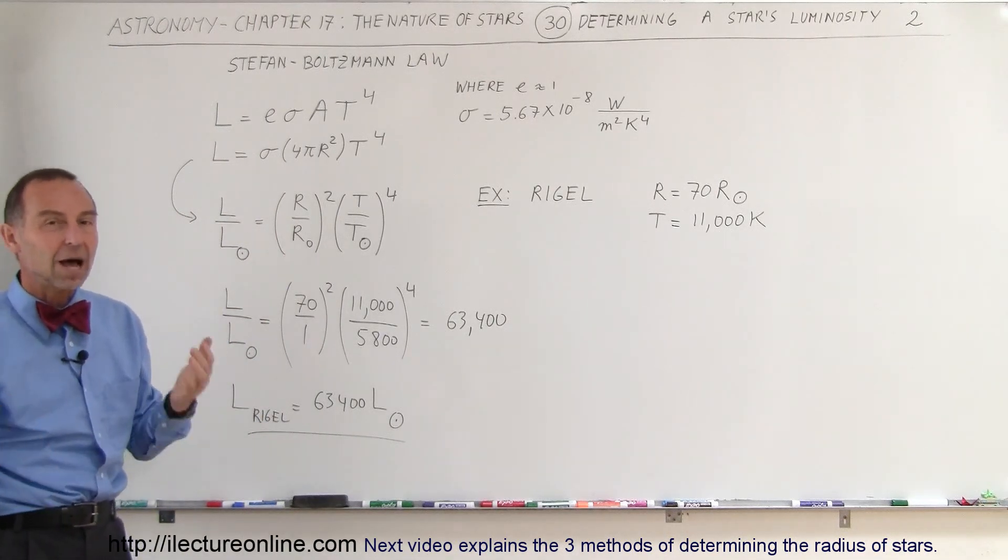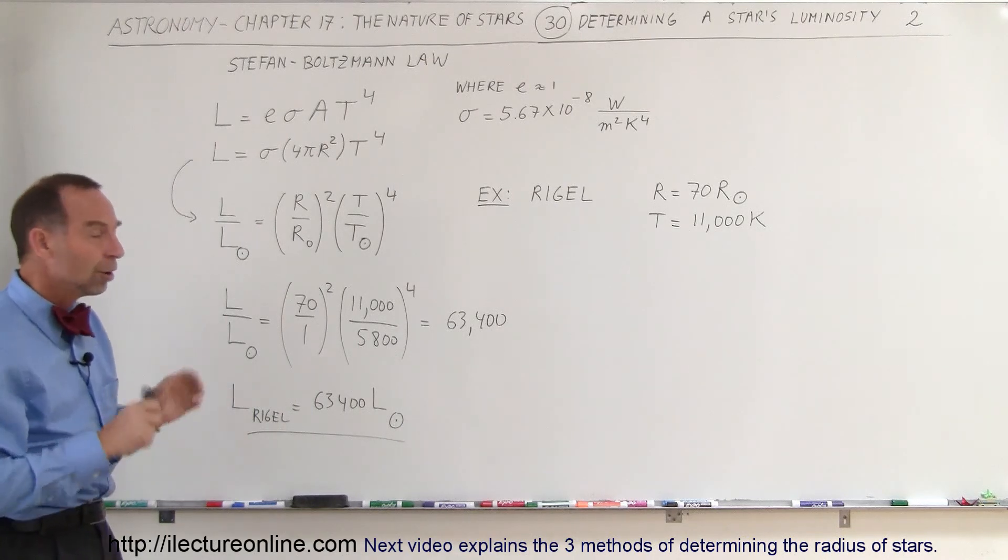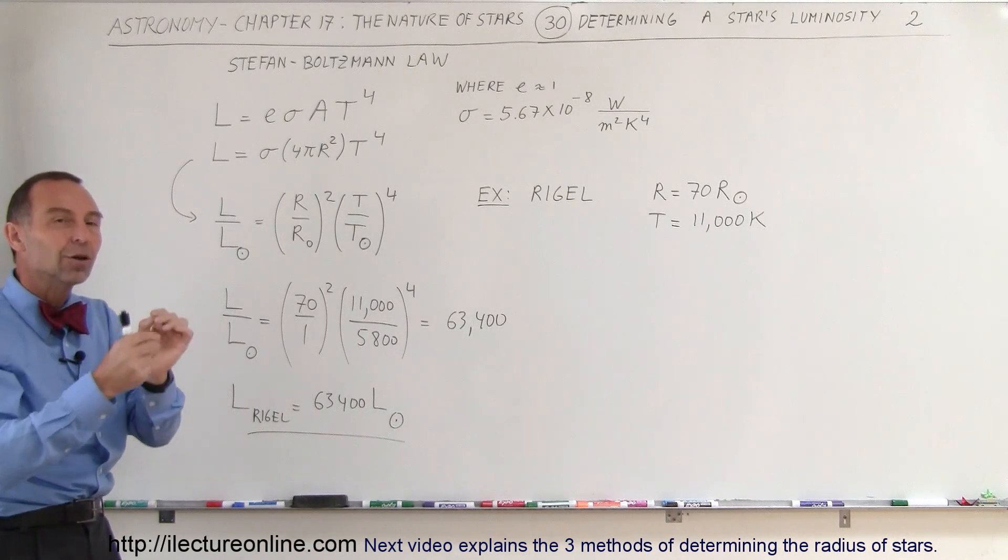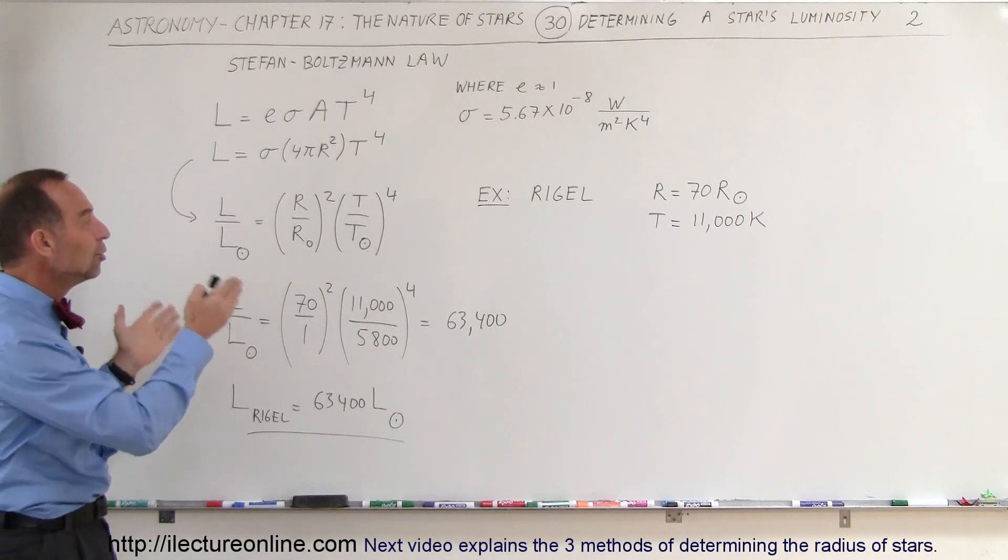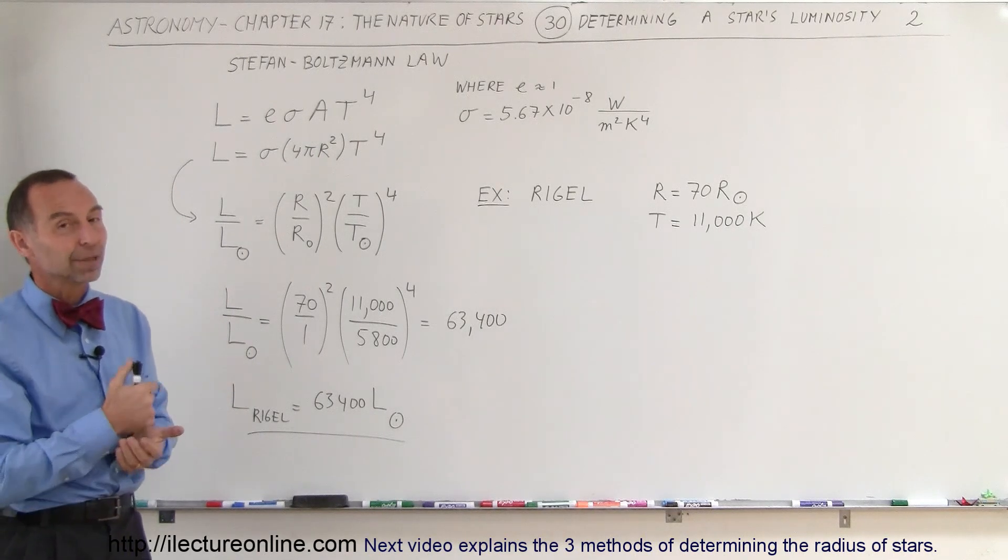So depending upon how we can measure things and what we can measure about a star, we can slowly zoom in and get all the different specifics about the properties of the star using this kind of equation. That's how we do that.